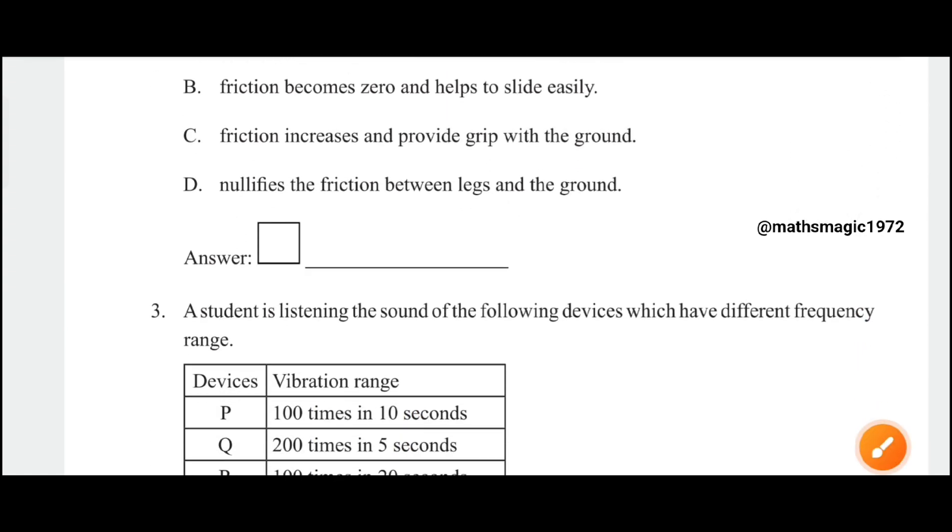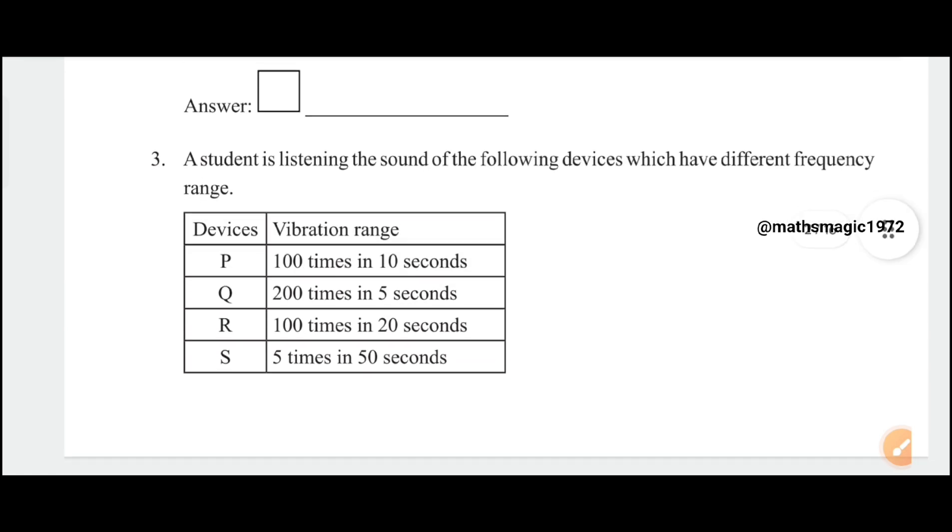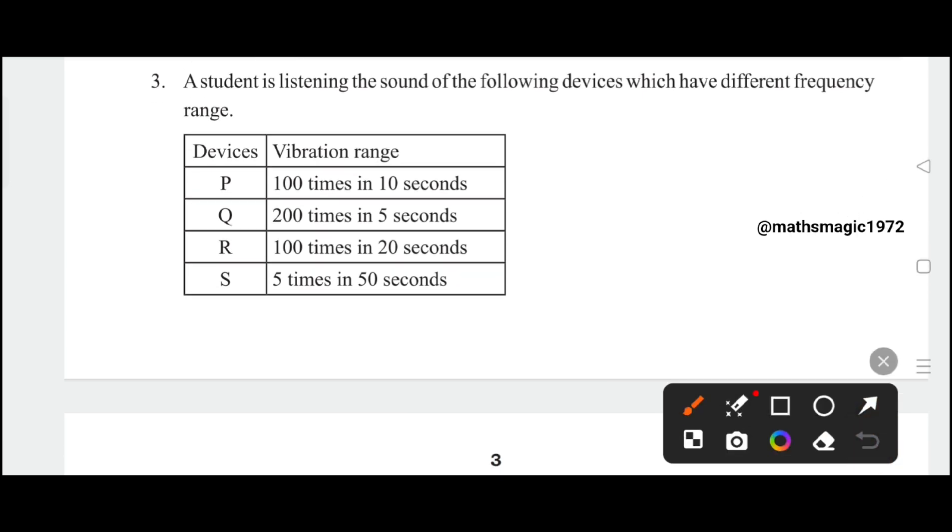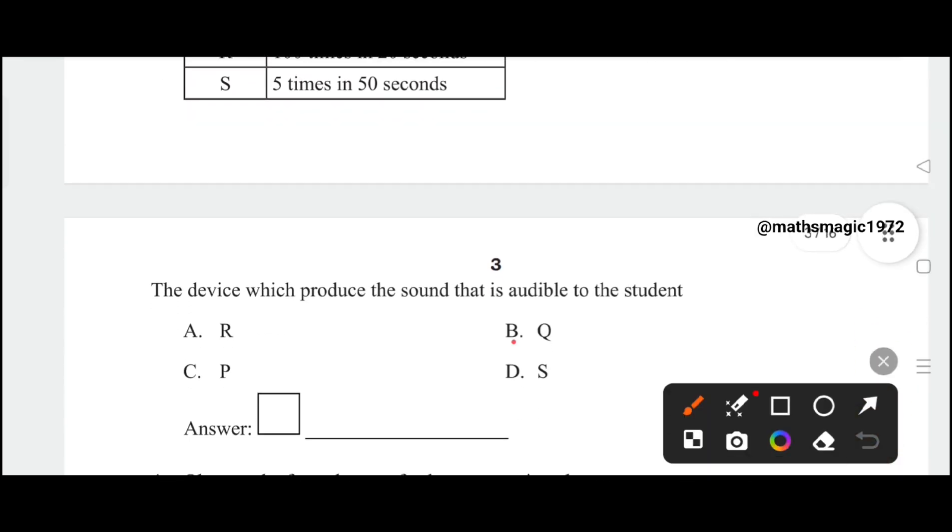A student is listening to the sound of the following devices which have different frequency ranges. Device P vibration raises 100 times in 10 seconds, Q 200 times in 5 seconds, R 100 times in 20 seconds, S 5 times in 50 seconds. The correct answer is option B, Q: 200 times in 5 seconds.